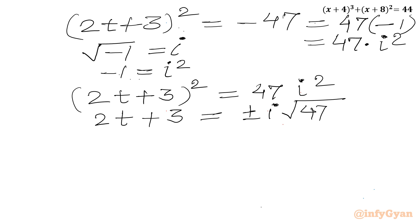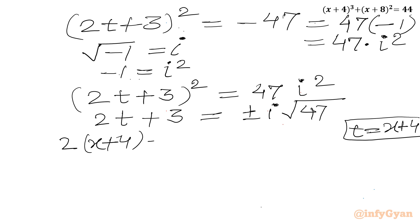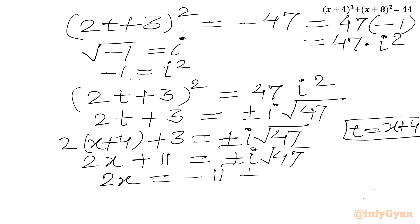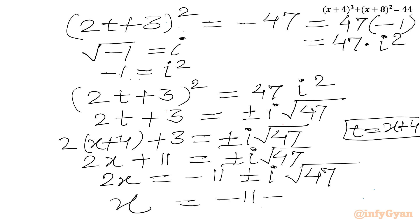Now we substitute back using t = x + 4. So 2(x + 4) + 3 = ±i√47, giving 2x + 11 = ±i√47. Subtracting 11 from both sides: 2x = −11 ± i√47. Dividing both sides by 2: x = (−11 ± i√47) / 2.